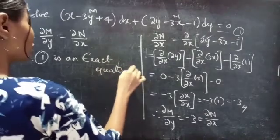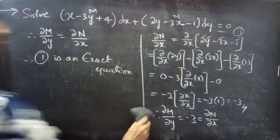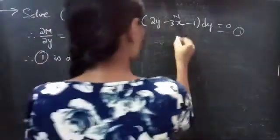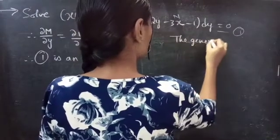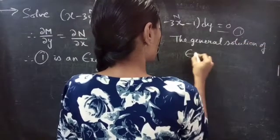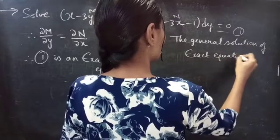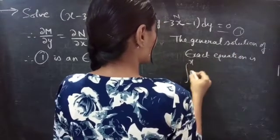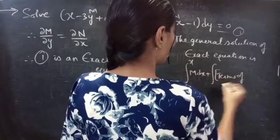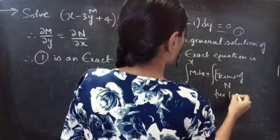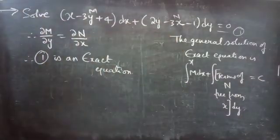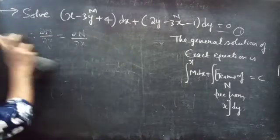So now we need to find the general solution to the given exact equation. We know that the general solution of an exact equation is given by: the integral over x of M dx plus the integral of terms of N free from x dy equals constant c.